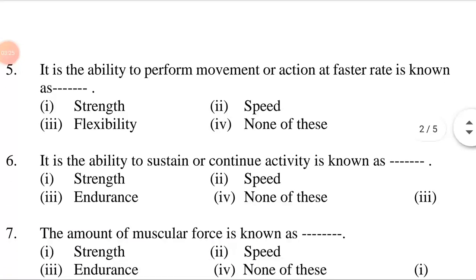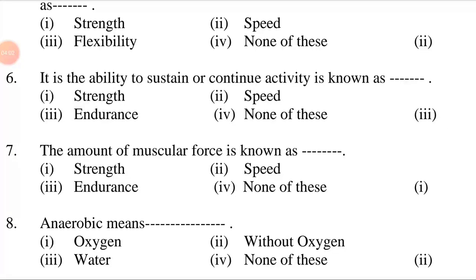The ability to perform movement or action at a faster rate is known as dash. First option: strength. Second option: speed. Third option: flexibility. Fourth option: none of these. The answer is option number two — speed. The ability to perform movement or action at a faster rate is known as speed. The ability to sustain or continue activity is known as dash. Options: strength, speed, endurance, none of these. The answer is option three — endurance. The ability to sustain or continue activity is known as endurance.